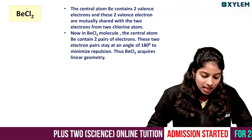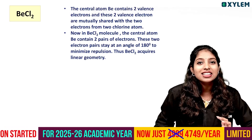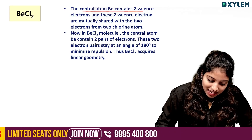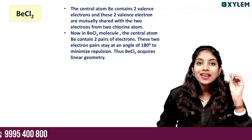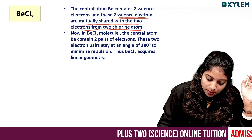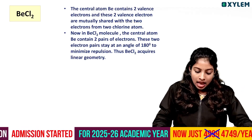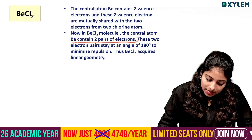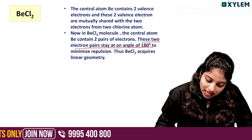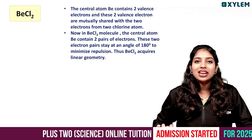How do I explain the shape of BeCl2 using VSEPR theory? The central atom beryllium contains two valence electrons, and these two valence electrons are mutually shared with two electrons from two chlorine atoms, forming two bond pairs of electrons. These two electron pairs stay at an angle of 180 degrees to minimize repulsion — that is, linear geometry with a bond angle of 180 degrees.